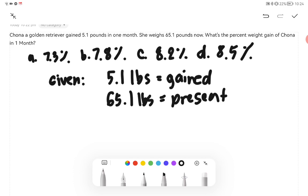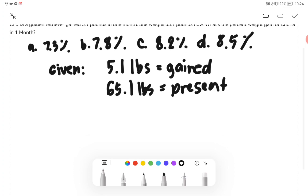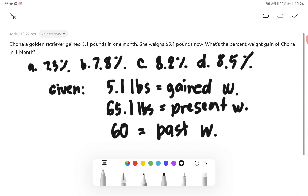So her weight before is 60—that is her past weight. Okay, so we are asked to find the percent weight gain of Jonah in one month. The technique here is to use our choices and multiply.